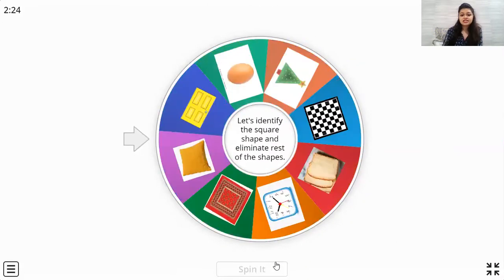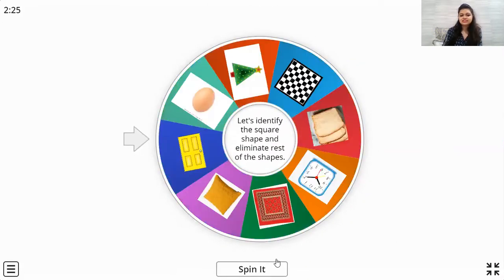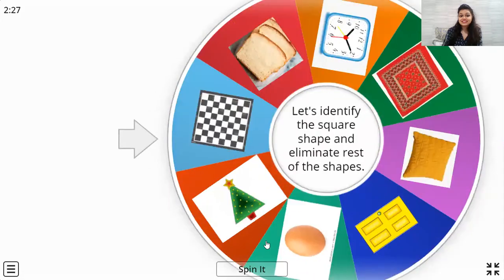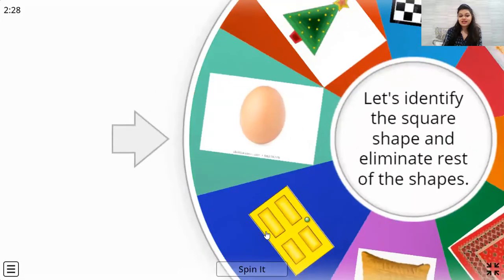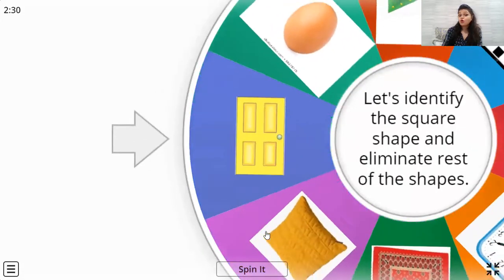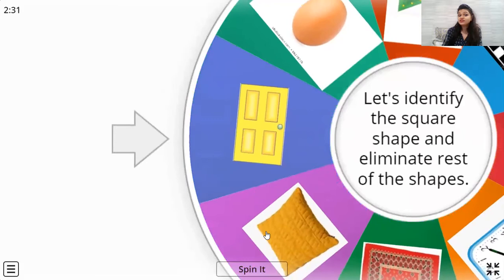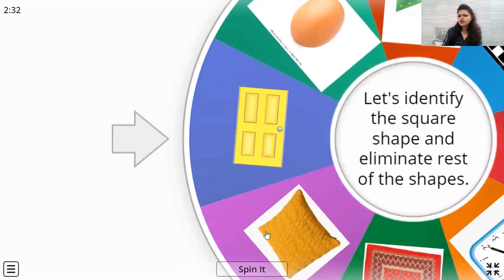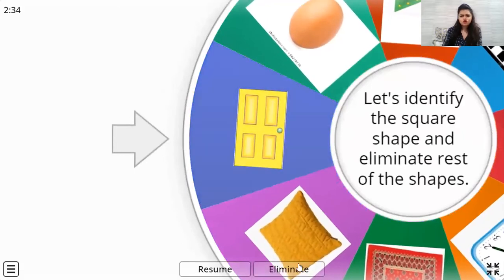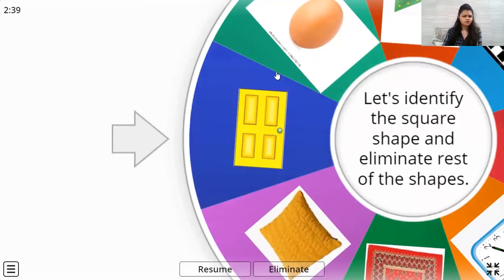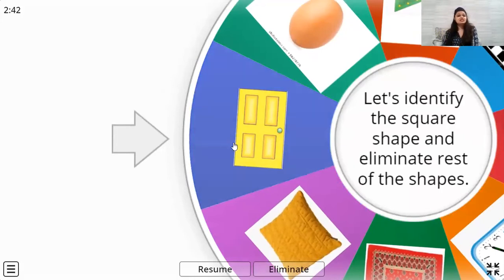Okay, the next one. Spin. Let's see which shape is going to come. Is it a square shape? No, it's a rectangle. Because in square all the four sides are equal. And here not all the four sides are equal — only two sides are equal. So we'll eliminate.